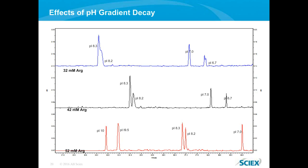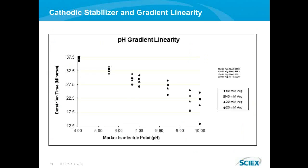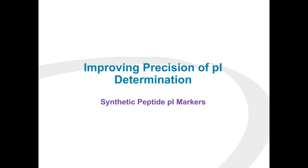The amount of arginine is important for the stability of the gradient. Without arginine, the gradient will decay rapidly and markers would not fully resolve. At 52 millimolar, we have a very tight stacking in a highly resolved region from 10 to 4.1. That's why our SOP includes 50 millimolar arginine as the cathodic stabilizer. A third benefit of the stable pH gradient is that it improves linearity when comparing detection time to marker isoelectric point. The more cathodic stabilizer added, the more compact the pH gradient becomes when focused, and therefore it becomes more linear.